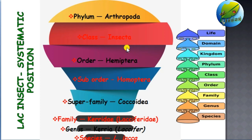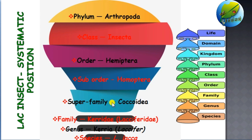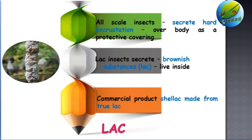Being an insect, lac comes under the phylum Arthropoda, class Insecta, order Hemiptera, and suborder Homoptera, as they have fore and hind wings of the same size. They come under the super family Coccoidea, which is the scale insect super family, family Kerriidae, genus Kerria or Laccifer, and species lacca. In nature, most scale insects secrete a hard encrustation.